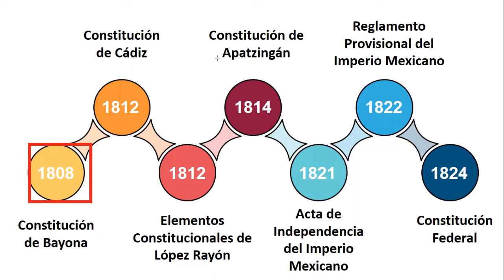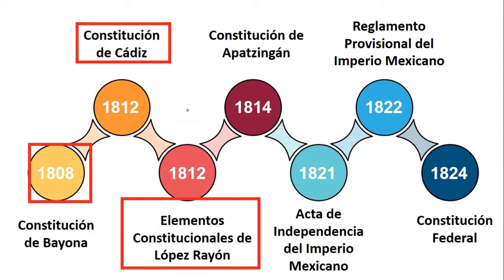En el año de 1812, en la ciudad de Cádiz en España, se firmó la Constitución de Cádiz. Todos aquellos opositores al régimen bonapartista establecieron una monarquía constitucional encabezada por don Fernando VII como rey legítimo de España. En el año de 1812, pero en nuestro país, tenemos los elementos constitucionales de Ignacio López Rayón. Este texto fue fundamental en virtud de que por primera vez ya se habla de una independencia de la América septentrional, estableciendo algunos derechos fundamentales para sus gobernados.